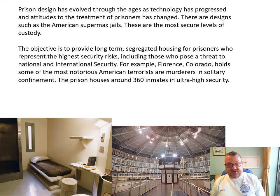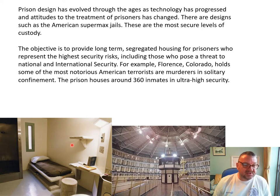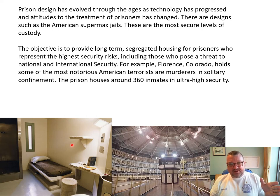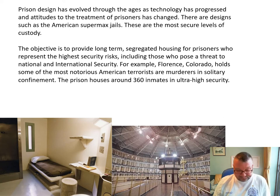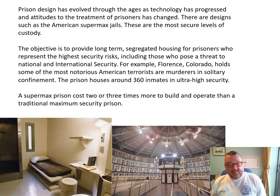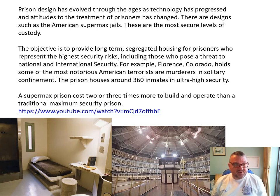It houses 360 inmates in ultra-high security. You can see here that the cells are actually pre-cast in concrete, so nothing can be moved, nothing can be changed — everything is formed in a concrete shell and dropped into the design. You can also see that they've employed the panopticon model to some extent. The key thing with the supermax prison is it costs two or three times more to build and operate than a traditional maximum security prison, so the running costs and setup costs are incredibly expensive.